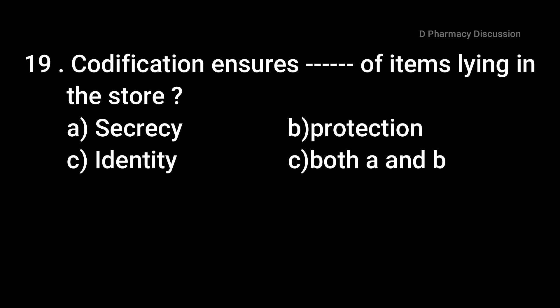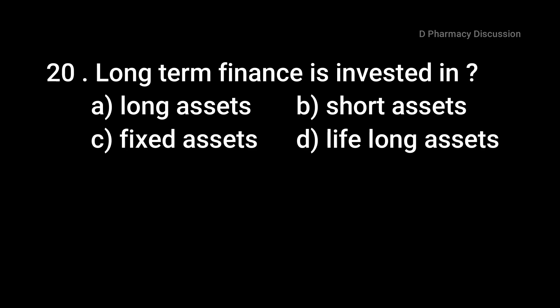Question number nineteen: qualification ensures the identity of items lying in the store — option A: secrecy, B: protection, C: identity, and option D: both A and B. The correct answer is option A, secrecy. Question number twenty: long-term finance is invested in — option A: long assets, B: short assets, C: fixed assets, and option D: lifelong assets. The correct answer is option C, that is fixed assets.